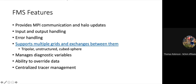FMS handles MPI communications, IO, errors, exchange grids — exchanging between different grids like the tripolar or cube sphere grid. It also has a diagnostic manager, data override, clocks, and tracer management. The code is hosted on GitHub, where you can fork it and contribute to it.